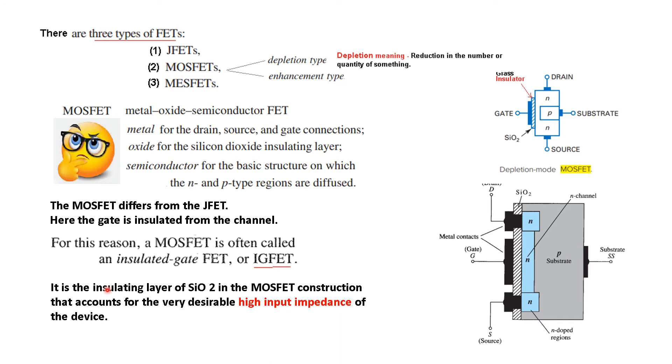And for this region, because of this insulated region, MOSFET is often called insulated gate FET or IGFET. It is the insulating layer of silicon dioxide in the MOSFET construction that accounts for a very desirable high input impedance of the device.